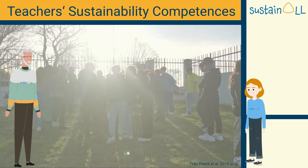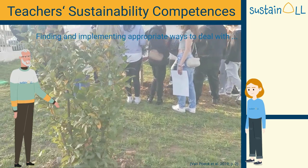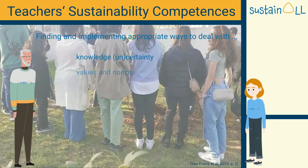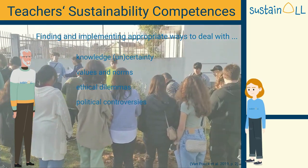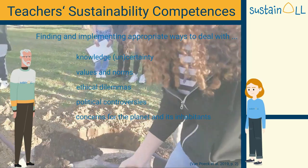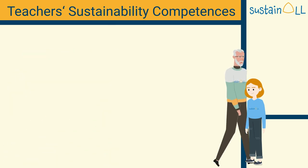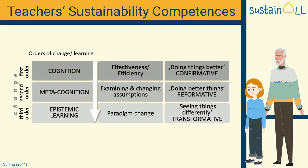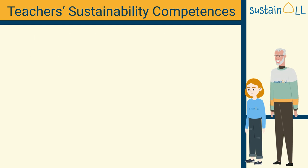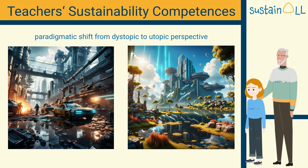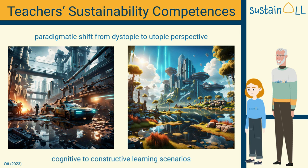According to Fawn Pook and colleagues, teachers are challenged with finding and implementing appropriate ways to deal with knowledge uncertainty, values and norms, ethical dilemmas, political controversies, and concerns for the planet and its inhabitants. We have already heard about Sterling's levels of learning. A teacher needs the competences to develop third-order learning — a shift from fostering cognition towards epistemic learning. This includes a paradigmatic shift from a dystopic to a utopic perspective of ESD. Teachers must be empowered to create learning scenarios not only from a cognitive, but also from a constructive perspective.